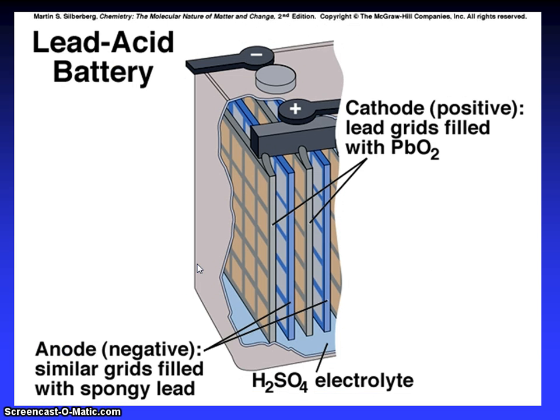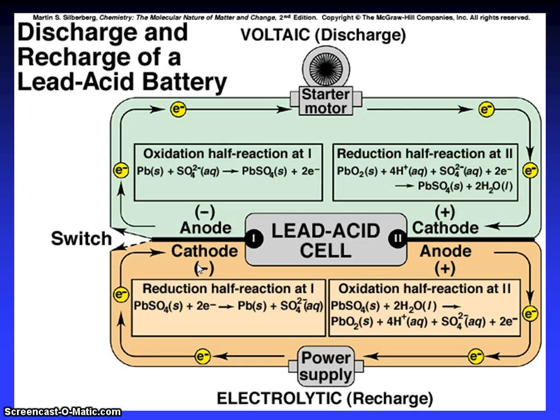Lead acid battery. Cathode positive, lead grid filled with lead oxide. Anode negative, similar grids filled with spongy lead, and sulfuric acid electrolyte.